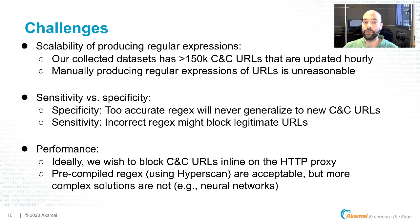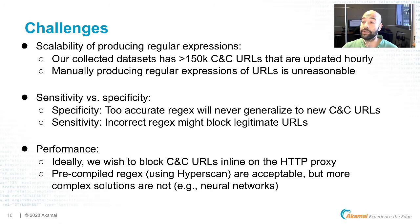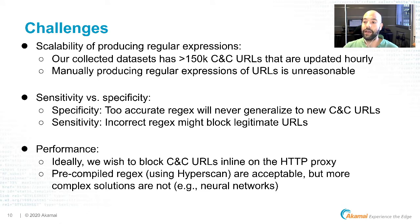The second challenge is a trade-off of sensitivity versus specificity. We want to produce regular expressions that are not too specific — failing to generalize to new command and control URLs — but also not too general, to avoid matching and blocking legitimate URLs. Lastly, regarding performance, we want to create regexes that can be compiled in advance using an engine like Intel HyperScan to provide acceptable performance, without being too complex to run on a high-performing proxy without introducing too much latency for end users.